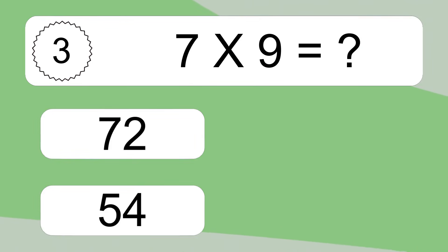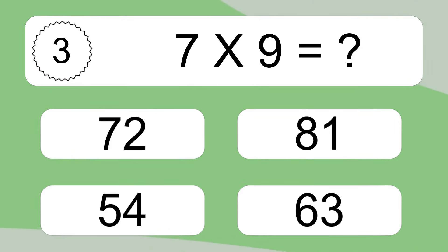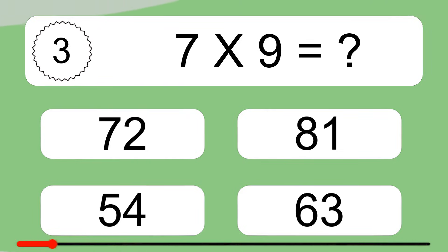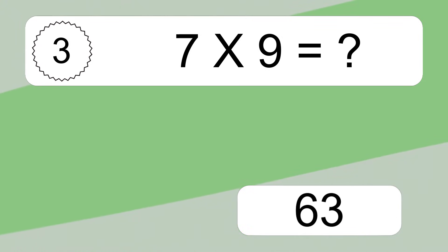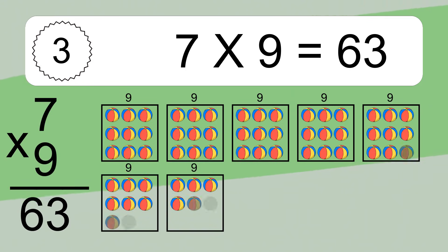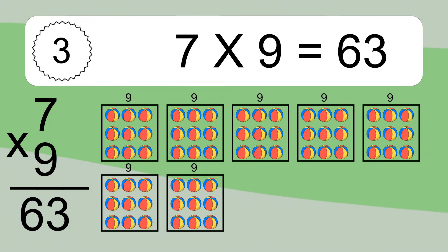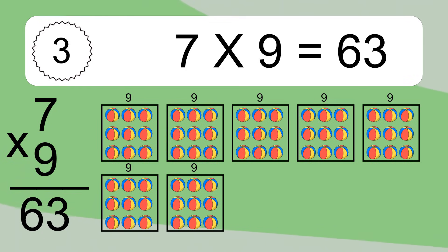7 times 9 equals what? 7 times 9 equals 63. We have 7 boxes, and each box has 9 colorful balls inside. If you count all the balls in all the boxes together, you will have 7 times 9 balls. This equals 63 balls.